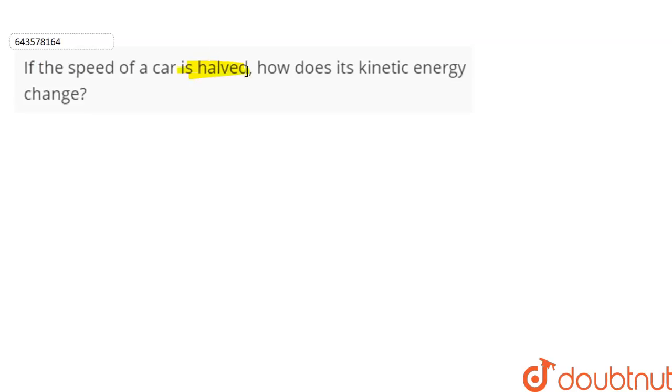The question says: if the speed of the car is halved, how does its kinetic energy change? So initially, the speed of the car is v, and then the car speed is halved, that is, the speed becomes v by 2.